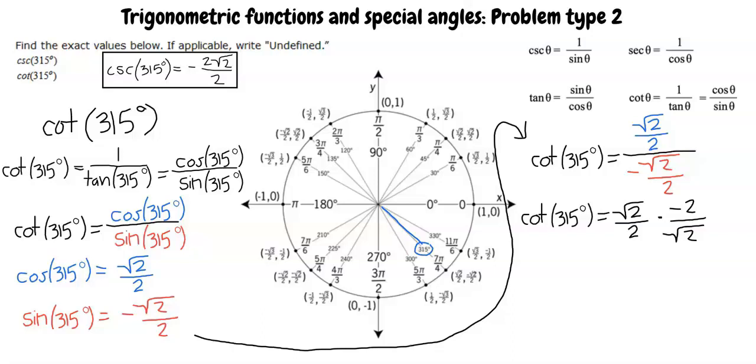and we see that we can reduce, or cancel, the 2 from the bottom on the left fraction and the top of the right fraction. We can also reduce the square root 2 from the top of the left fraction and the bottom of the right fraction, and write negative 1. And now this problem is complete.